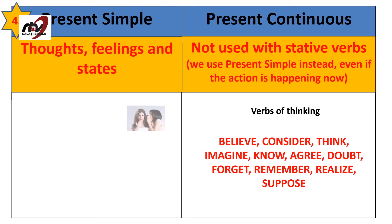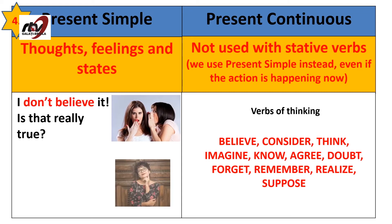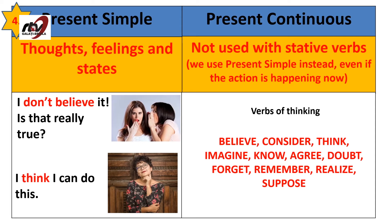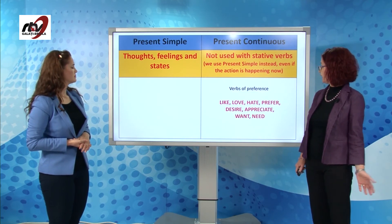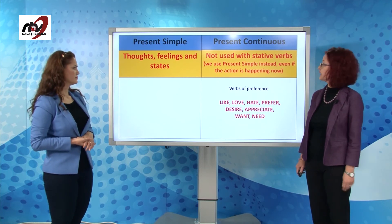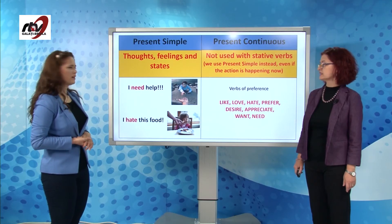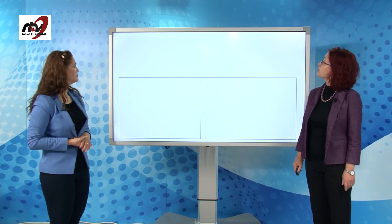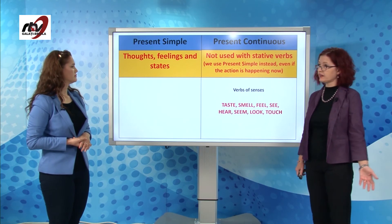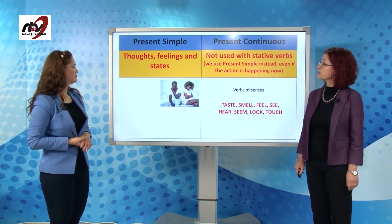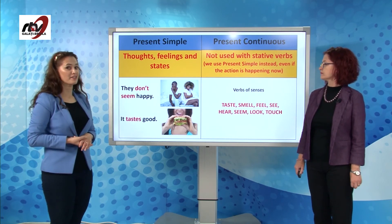The second category of stative verbs: verbs of preference — like, love, hate, prefer, desire, want and need. Examples: I need help, and I hate this food. The third category: verbs of senses — taste, smell, hear, seem, look, touch. Examples: they don't seem happy, it tastes very good.